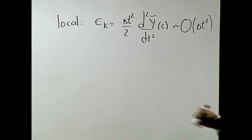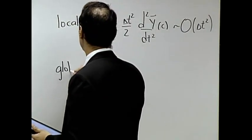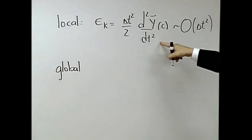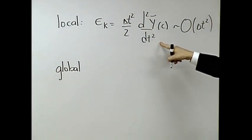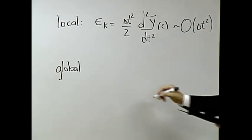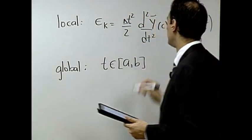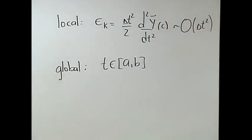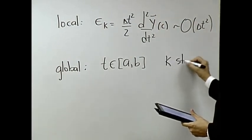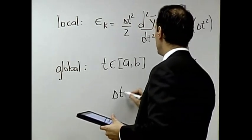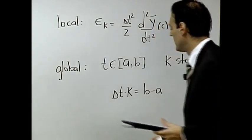Now let's talk about the global error. If I make this error every single step, how does that build up? Take an interval of time — I'm going to solve it from time a to time b. I'm going to solve it for a period of time and take k steps. In other words, delta T times k will be the interval b minus a.